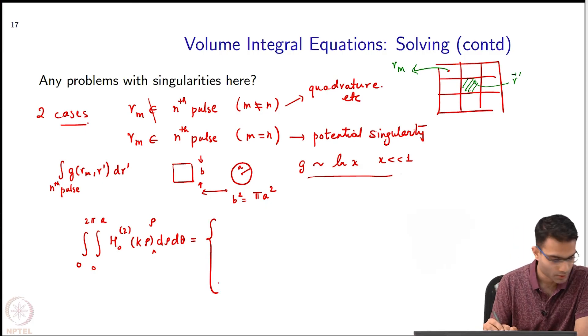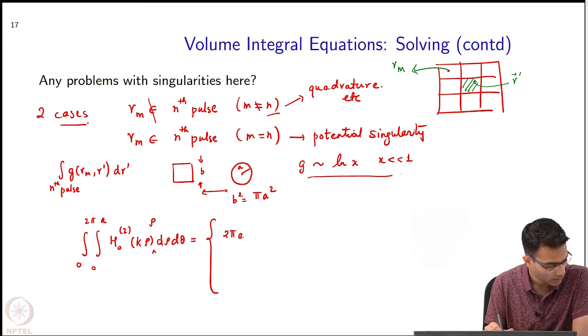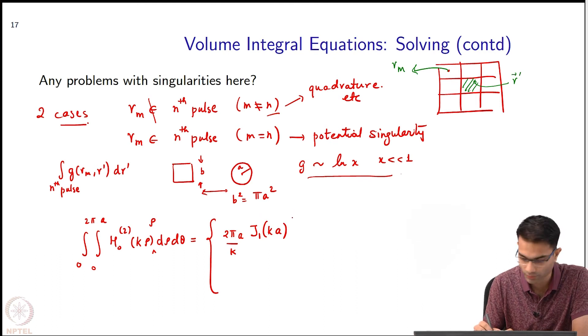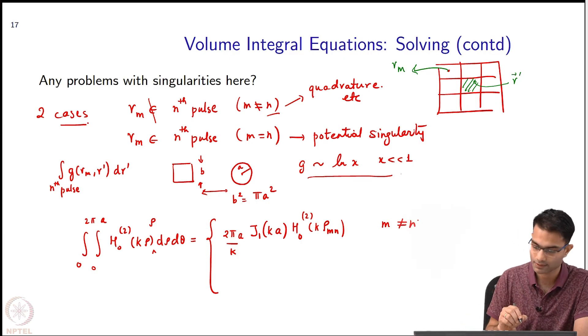So I will write down the two expressions. The first expression is for m not equal to n. So this is 2π A / k j_1(kA). So you notice the radius of this cylinder is appearing - this is one expression.